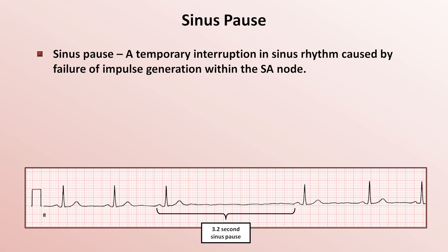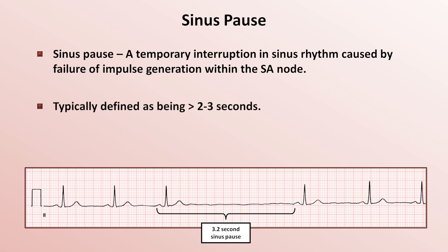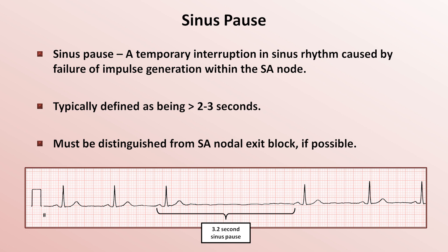Next up is sinus pauses. A sinus pause is a temporary interruption in sinus rhythm caused by failure of impulse generation within the SA node. There is a variety of opinions on the threshold, but either 2 or 3 seconds is commonly cited. Sinus pauses need to be distinguished from exit block, which may not be possible without an EP study. Although sinus pauses are usually in the 2-3 second range, they can be 10 seconds or even longer and therefore can result in syncope.